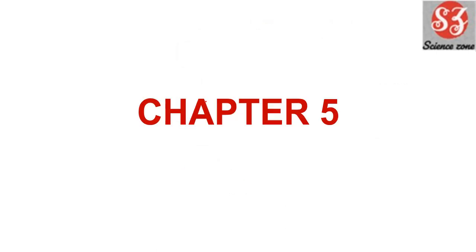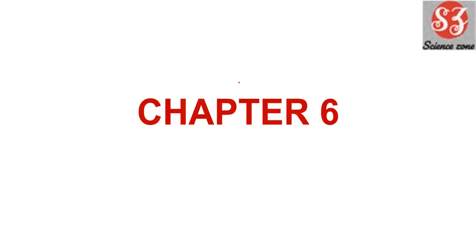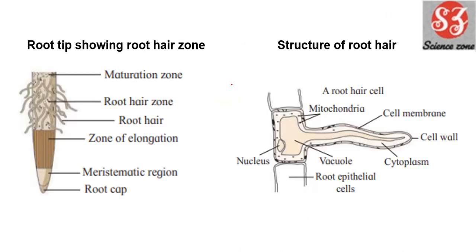Next is Chapter 5. The first important diagram is Urey and Miller's experiment. This is the diagram of Urey and Miller's experiment, and this is a very important one. The experiment can be asked and you will need to draw this diagram alongside your answer.